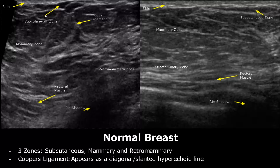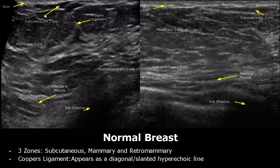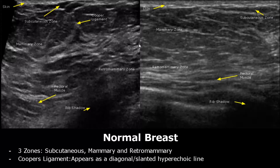Here we have images of normal breast. The uppermost layer is the skin, which is the hyperechoic layer. Below that is the subcutaneous zone, which is usually hypoechoic compared to the tissues below. The largest region is the mammary zone, which usually has mixed echogenicity. Most pathologies occur in this zone. The hyperechoic area is the fibroglandular tissue, and these hyperechoic slanted or diagonal lines are Cooper ligaments. This striated structure is the pectoral muscle.